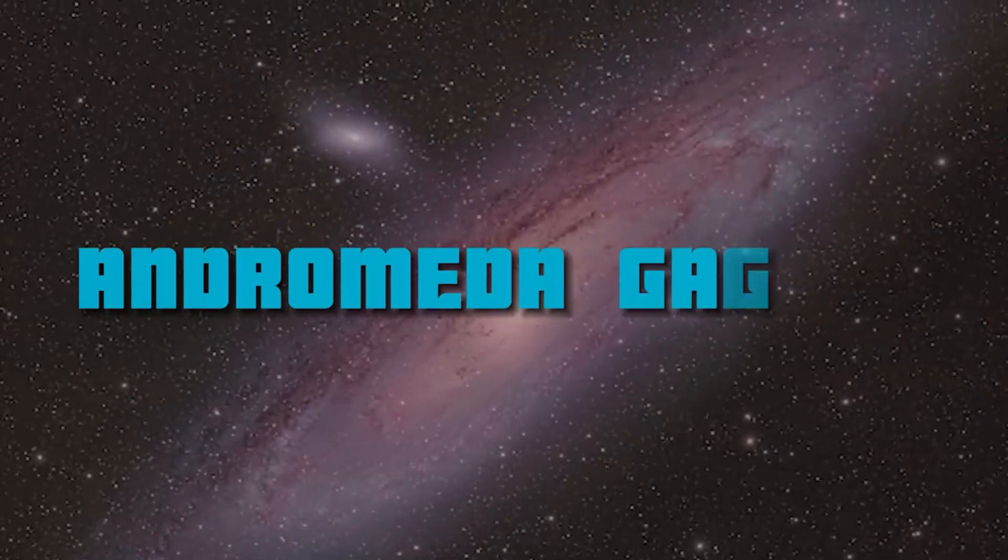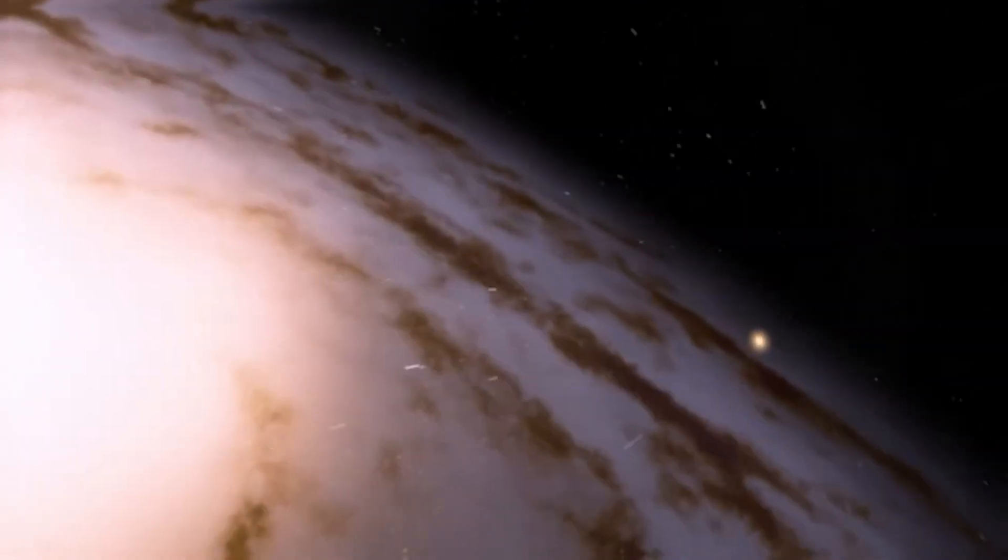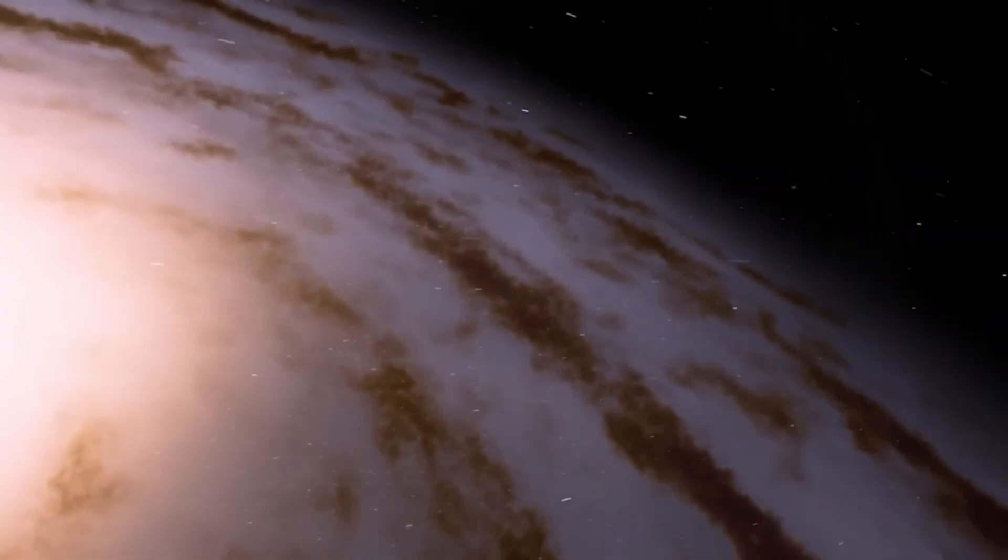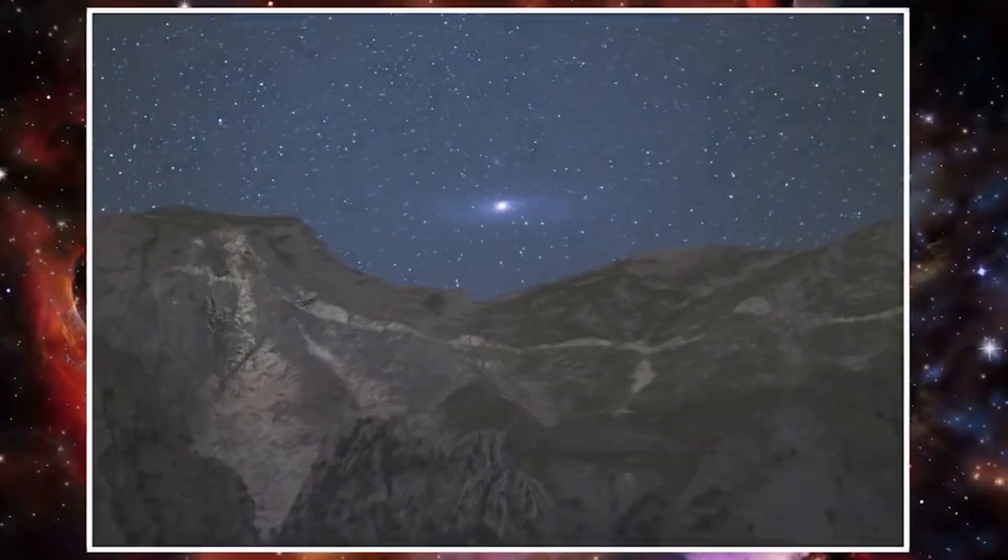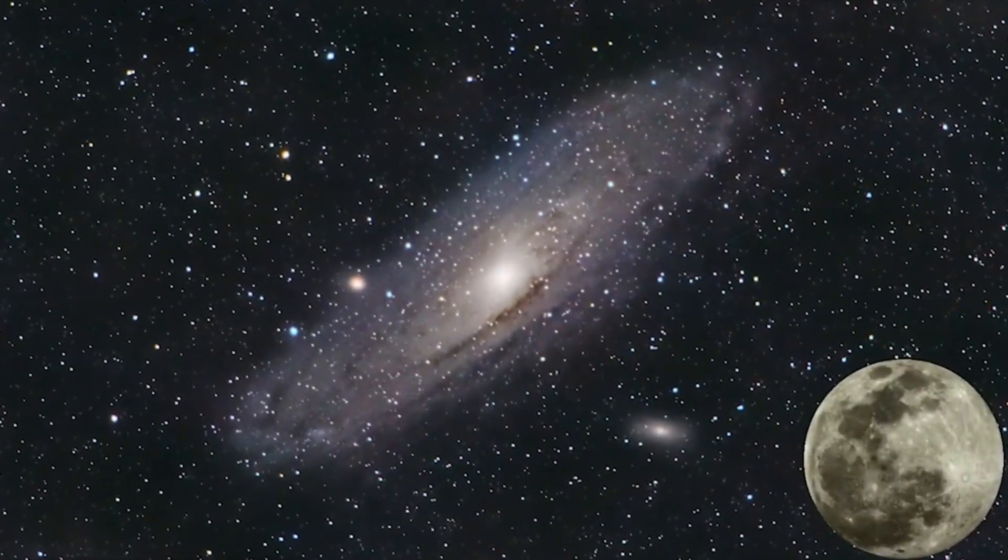The Andromeda Galaxy, often called M31 or Messier 31, is a mysterious marvel in our night canvas. On a clear night, you can spot Andromeda as a dim cluster of stars, roughly the diameter of half the full moon.